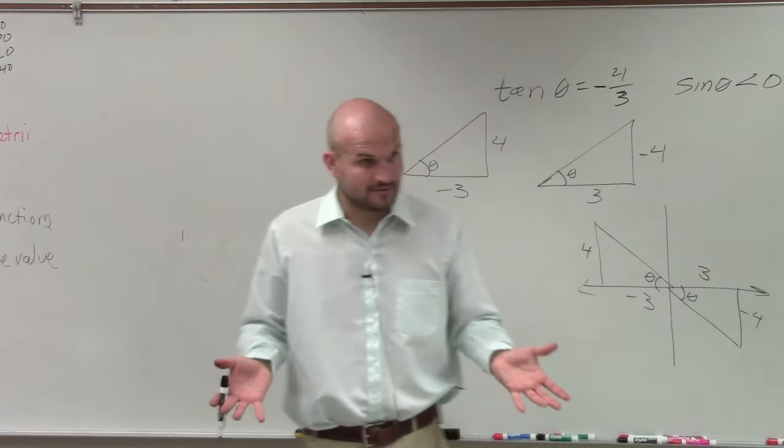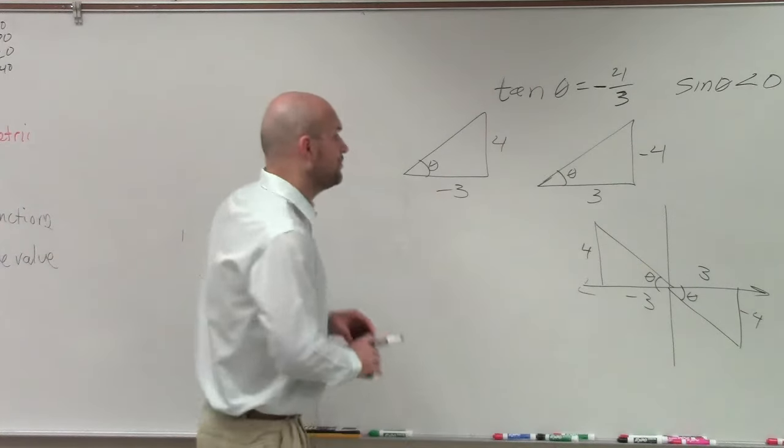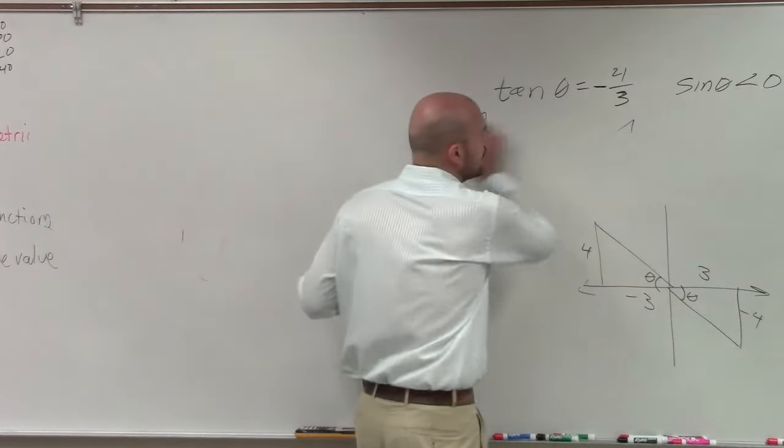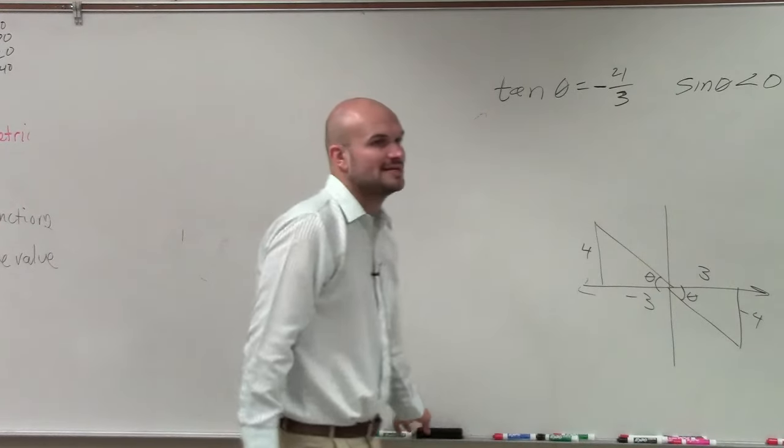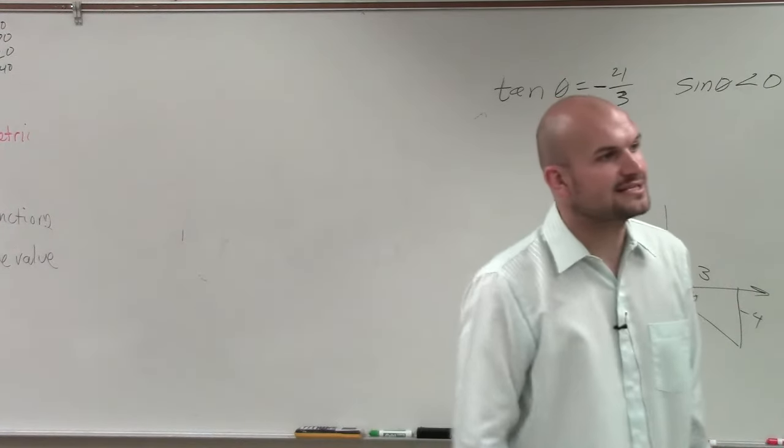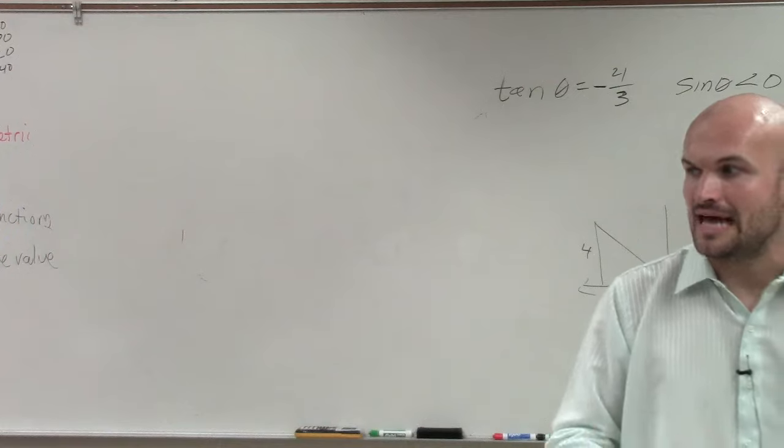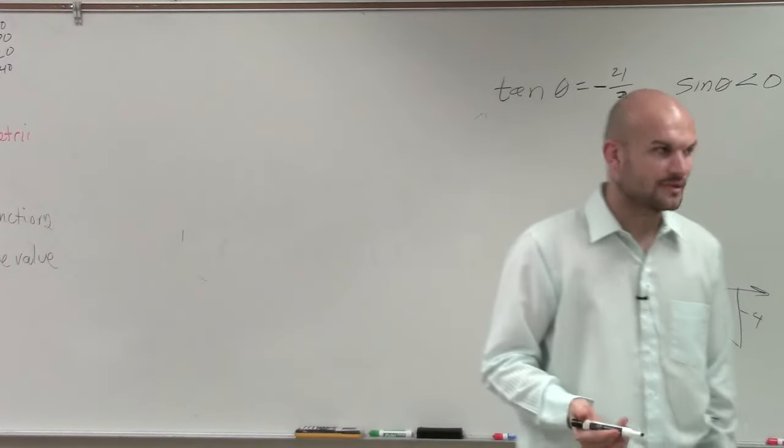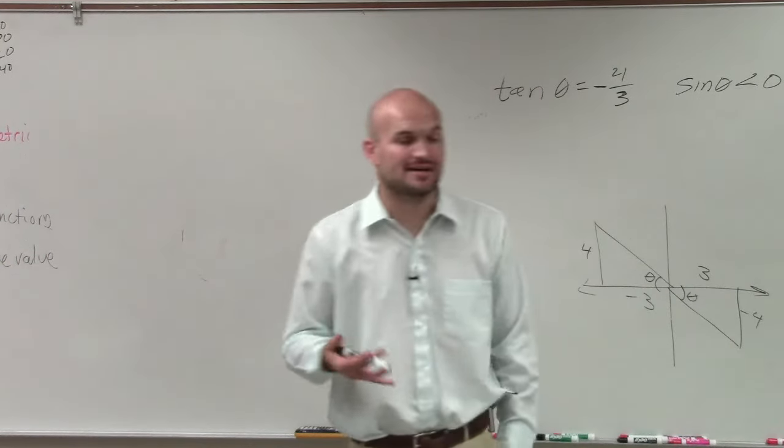We don't want to do that though, right? OK, we only want to do this once. So what we have is we have a constraint. And the constraint says sine is less than theta. Or I'm sorry, sine is less than zero. Sine of theta, I'm sorry, is less than zero.